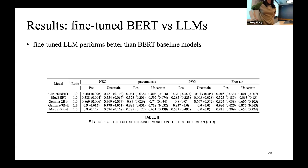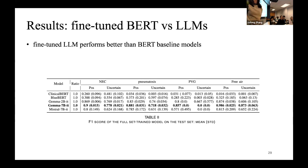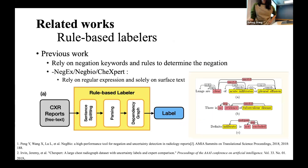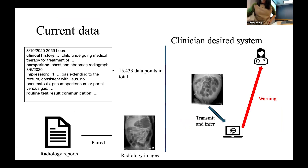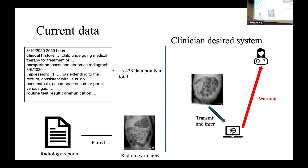A follow-up question asked whether other metrics or inputs could be used beyond the radiology report. Currently only the radiology report is used. Specifically, only the impression section is used during training, and the average token count per report is around 250 tokens.